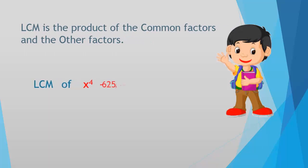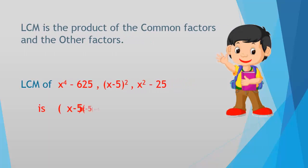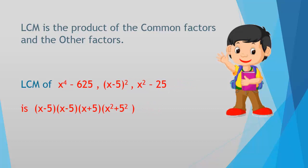LCM is the product of the common factors and the other factors. Therefore, the LCM of (x⁴ - 625), (x - 5)², and (x² - 25) is (x - 5)(x - 5)(x + 5)(x² + 25).